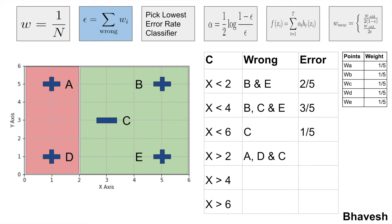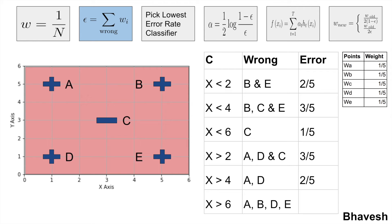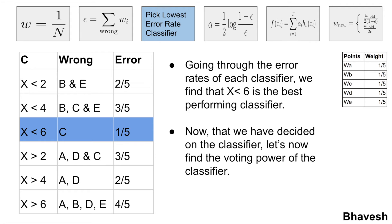For x>2, any point greater than 2 is considered positive. Points a and d are misclassified as negative although they are positive, and c is misclassified as positive although it is negative. Adding the weights of all 3 misclassified points gives an error rate of 3/5. For x>4, the error rate is 2/5; for x>6, four points (a, b, d, e) are misclassified giving 4/5. Picking the lowest error rate classifier: x<6 misclassifies only 1 point with an error of 1/5 — that is our best classifier for round 1.